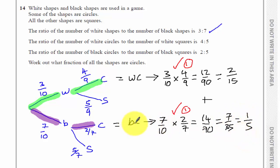So one fifth of all the shapes are black circles, and two fifteenths are white circles. Showing the examiner that you know you've got to add one fifth to two fifteenths, or any of the equivalent fractions here, will pick you up your third mark.